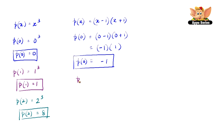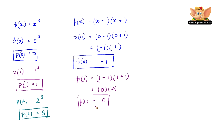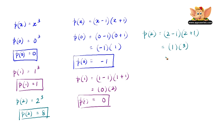The next value is p of 1, which is 1 minus 1 into 1 plus 1. 1 minus 1 is 0, and 1 plus 1 is 2, but anything multiplied by 0 is 0. Therefore, p of 1 is 0. The final value is p of 2, so we have 2 minus 1 into 2 plus 1. 2 minus 1 is 1 and 2 plus 1 is 3, so 3 into 1 is 3. Therefore, p of 2 is equal to 3.